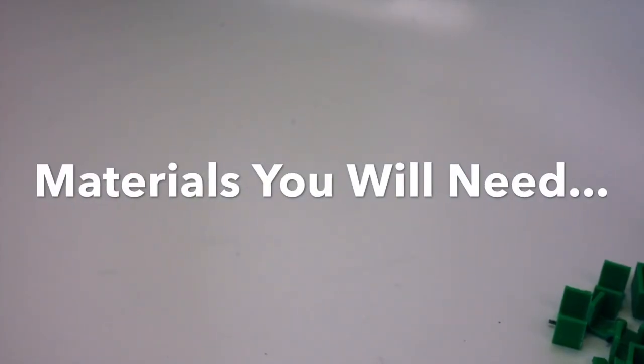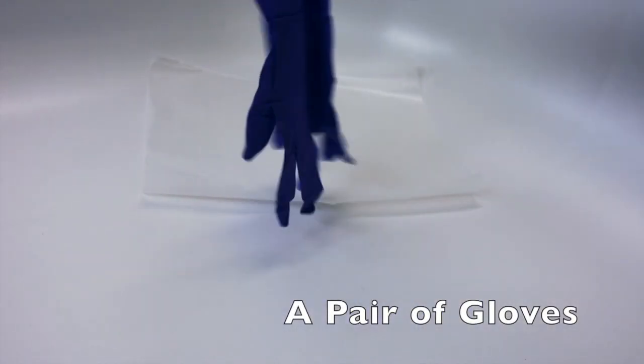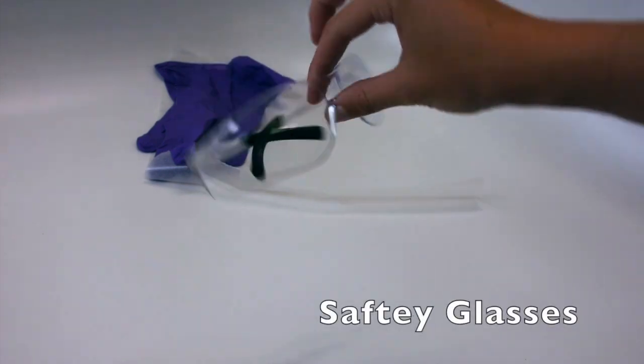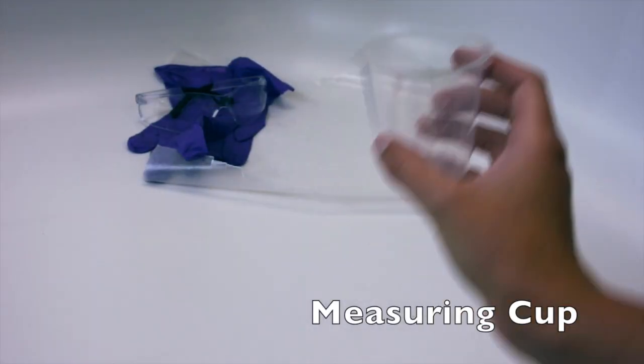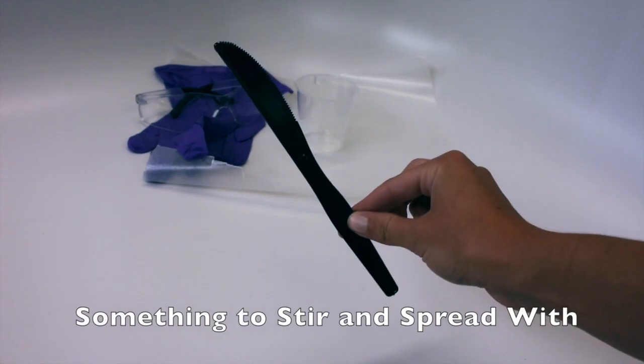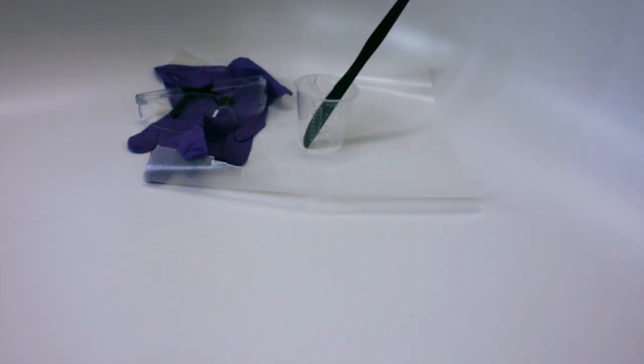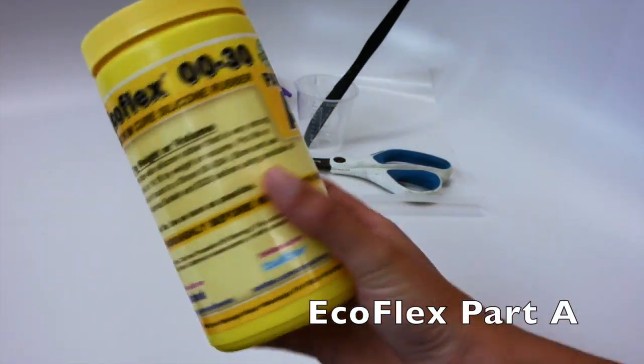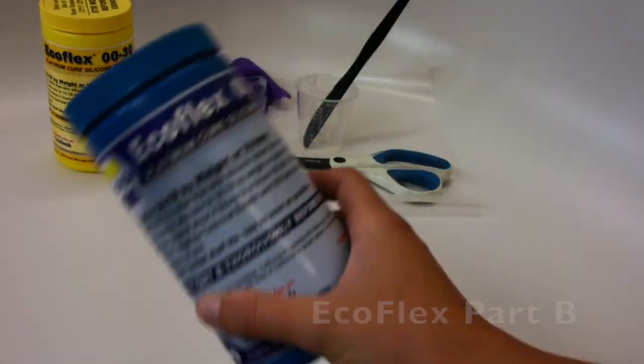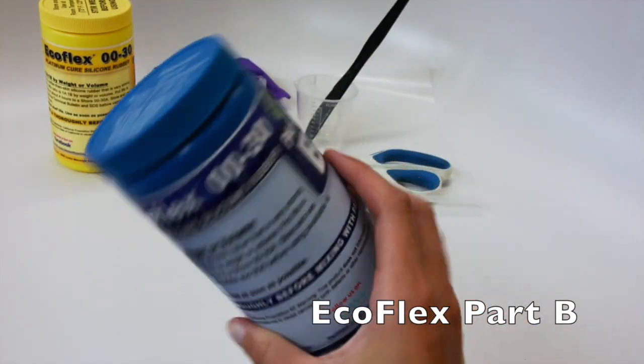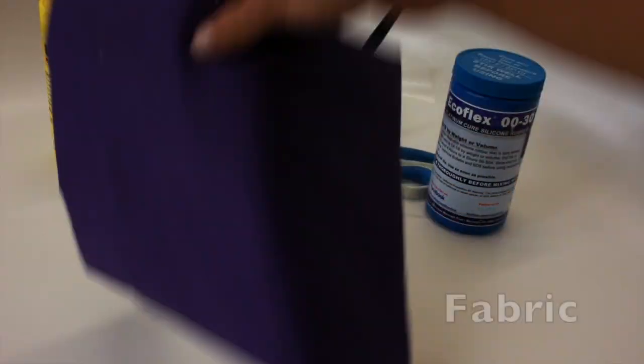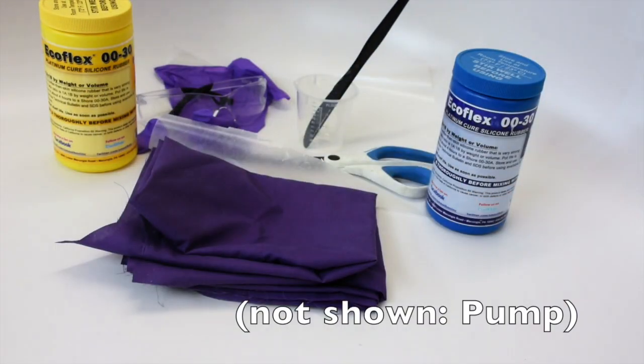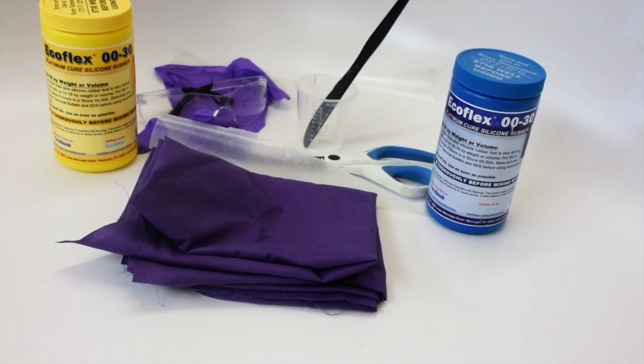The materials you will need for this project include a sheet of wax paper, a pair of gloves, safety glasses, a measuring cup, something to stir and spread with, scissors, EcoFlex both part A and part B, fabric, and you will also need a pump.